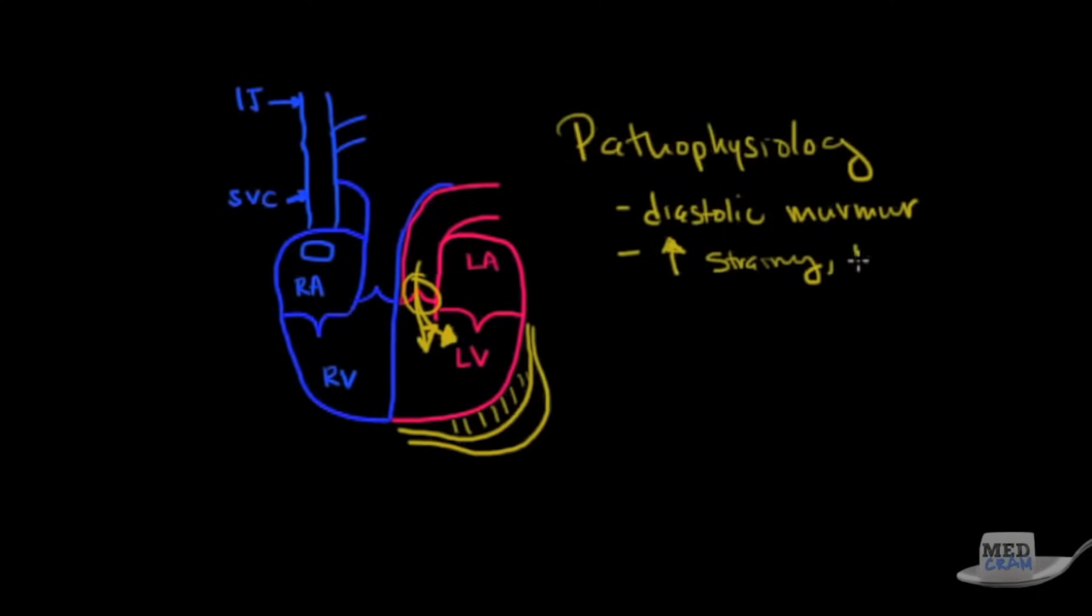So what are those things that causes the left side to get bigger would be any kind of straining, anything that increases afterload. And what's going to cause it to get smaller, the murmur to get smaller? Well, anything that decreases the left side of the heart. So that would be a Valsalva or anything that causes dilation of the peripheral vasculature. That would be like amyl nitrate.